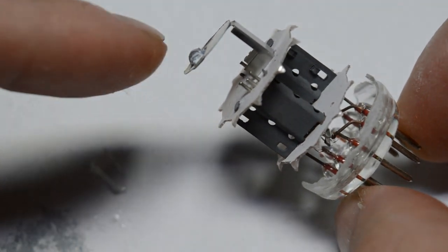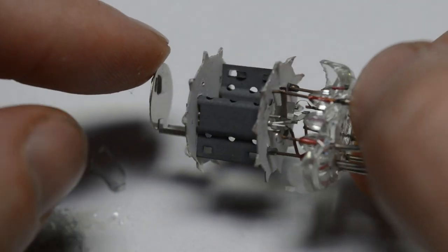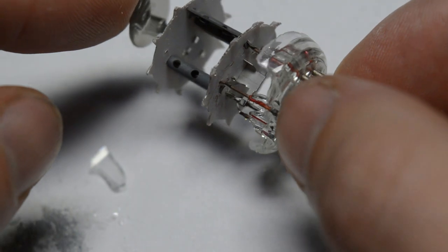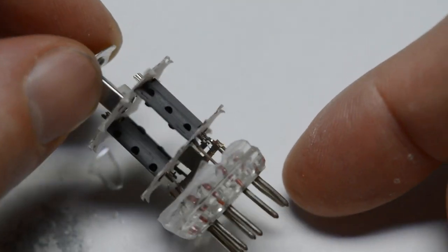On top of the tube, we have the getter. And on the bottom, we have all the connections leading to the outside pins.